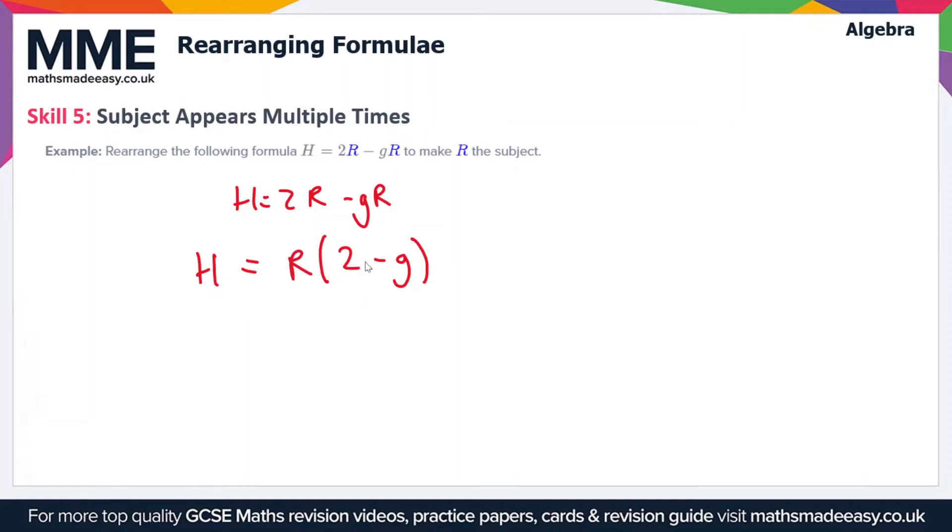h = R(2 - g), and then all we have to do is divide both sides by what's inside the brackets. We're left with h/(2 - g) = R. You can write it in brackets if you want but you don't have to.